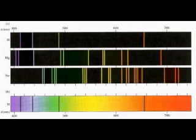Spectrum lines come from the electrons surrounding atoms. Electrons exist in energy levels around atoms. When an electron is excited, it moves to a higher energy level. When it falls back to the original level, it gives off a photon of light which corresponds exactly with the change in energy level. Each element therefore has its own characteristic energy levels, and the spectrum lines correspond with the energy jumps between those energy levels.